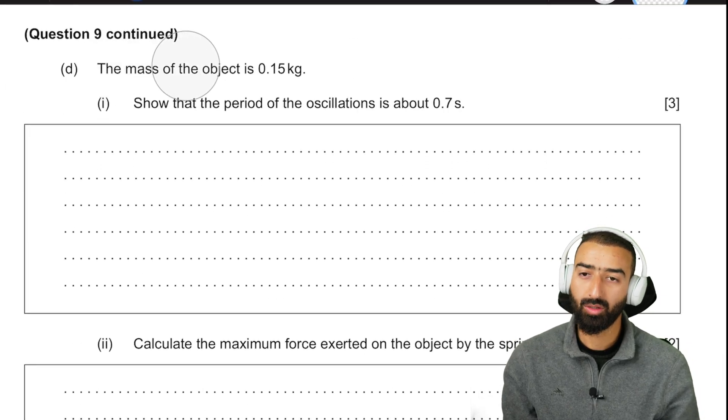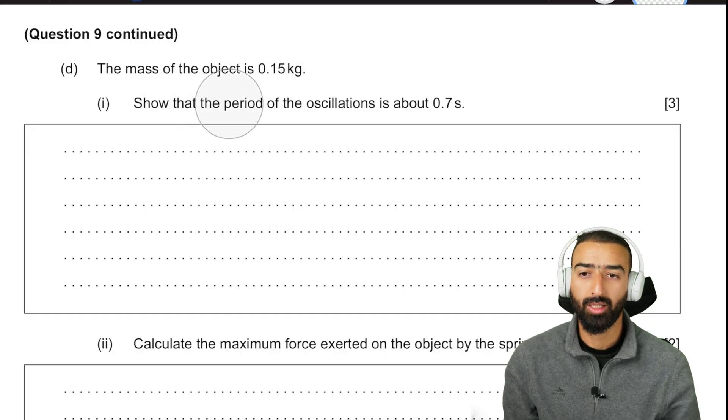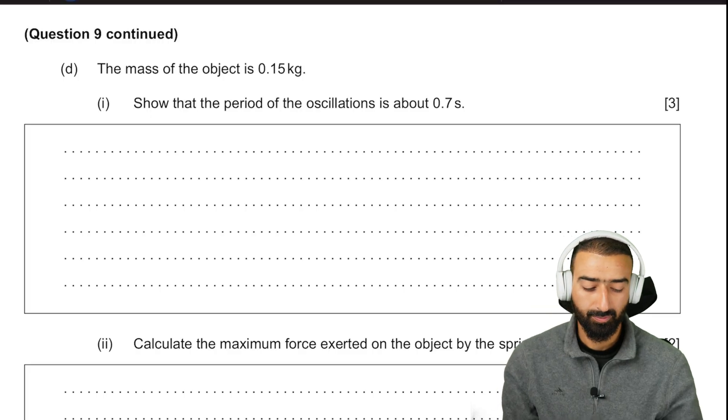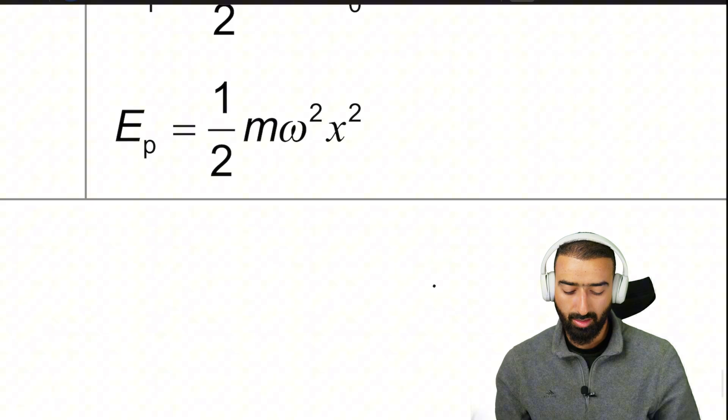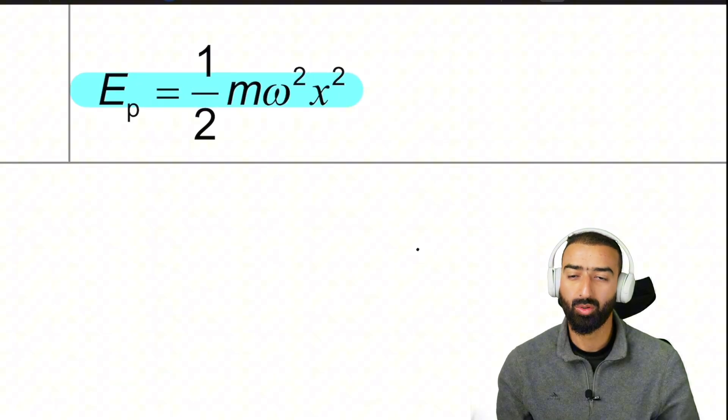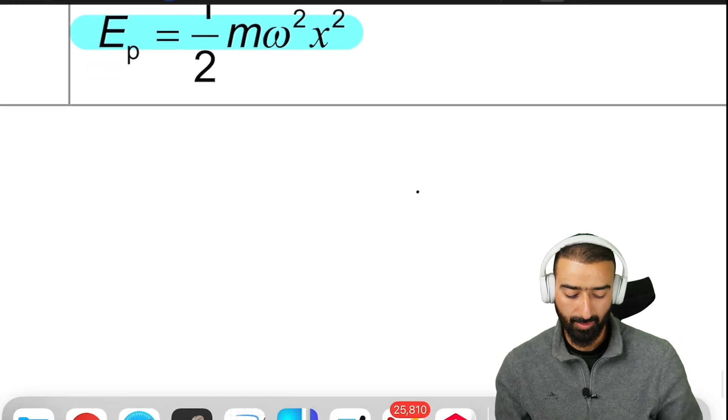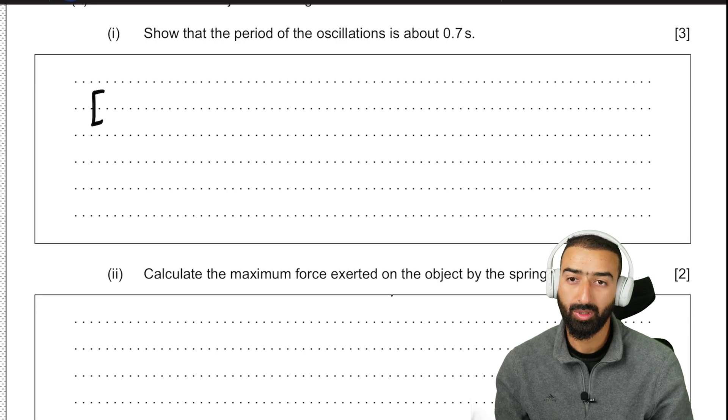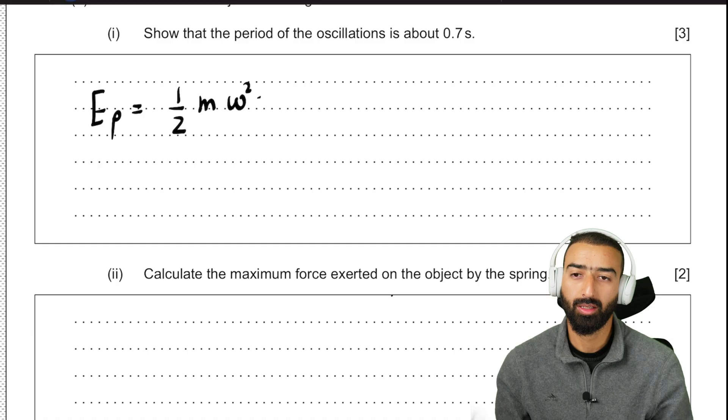Next up, the mass of the object is 0.15 kilogram. Show that the period of the oscillation is about 0.7 seconds. You'll find in your data sheet an equation that says the maximum potential energy in a simple harmonic motion is half m omega square x square. Let's use that. If you use that equation, the maximum potential energy is half m omega square x square.